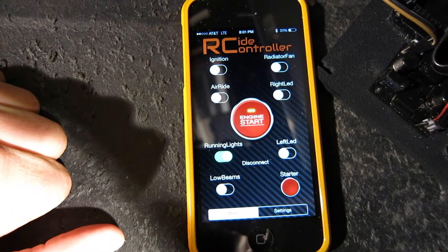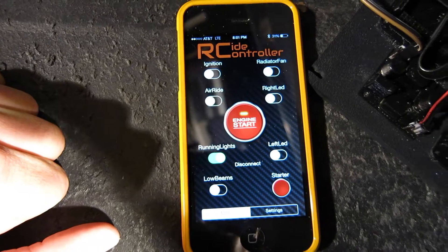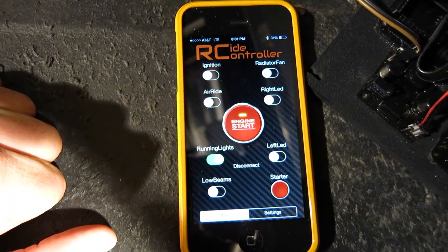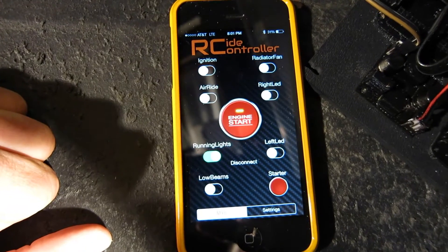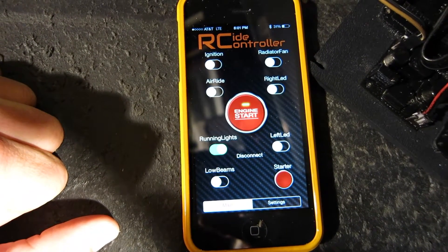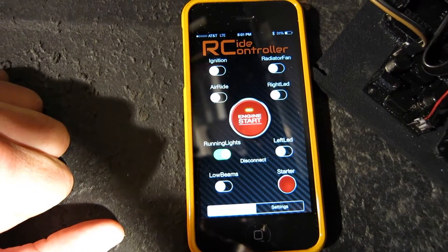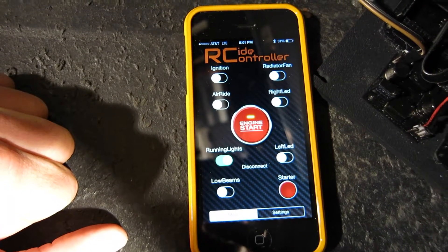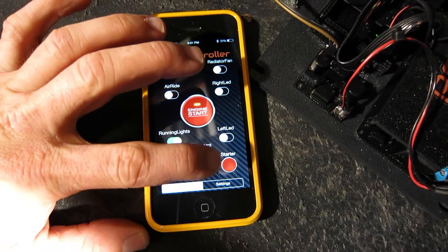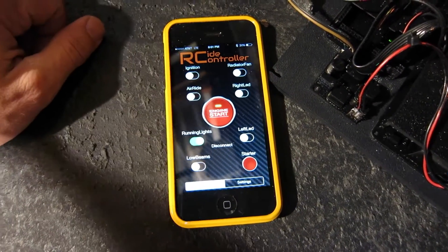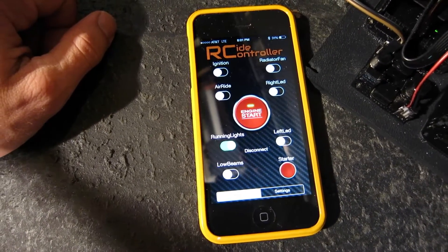I have ignition on relay one, air ride on relay two, running lights on relay three, low beams on relay four, radiator fan on relay five, right LED on relay six, left LED on relay seven, and then my starter, which is actually these buttons on the right, mapped to relay eight.